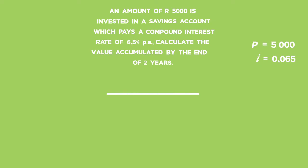They ask you to calculate the value accumulated. In other words, they're asking you for the value of A by the end of two years. That means N is equal to 2.